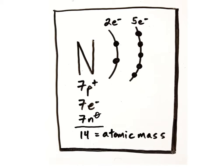Most nitrogen atoms have seven neutrons, but some may have eight. A nitrogen atom with seven neutrons has a mass number of fourteen — seven protons plus seven neutrons. Remember, the mass of the electrons is so small that for our purposes we don't factor them into our determination of the mass number.